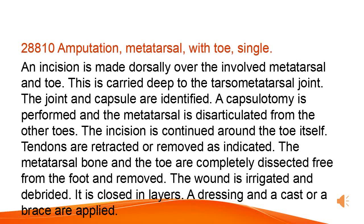An incision is made dorsally over the involved metatarsal and toe, carried deep to the tarsometatarsal joint. The joint and capsule are identified. A capsulotomy is performed and the metatarsal is disarticulated from the other toes. The incision is continued around the toe itself. Tendons are retracted or removed as indicated. The metatarsal bone and the toe are completely dissected free from the foot and removed. The wound is irrigated and debrided, then closed in layers. A dressing and a cast or brace are applied.